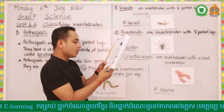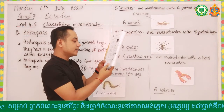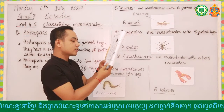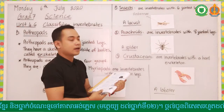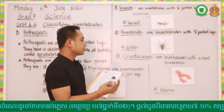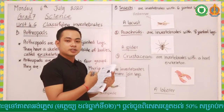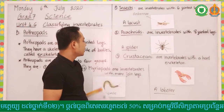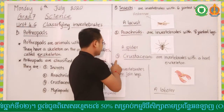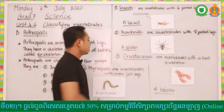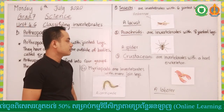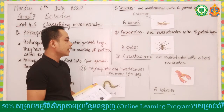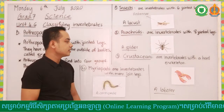As you can see in the picture, arachnids have no wings or antennae. So spiders and scorpions are called arachnids. Number three, we are talking about crustaceans. Crustaceans are invertebrates with a hard exoskeleton.